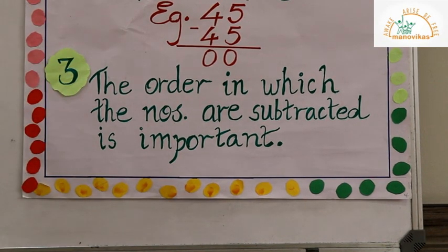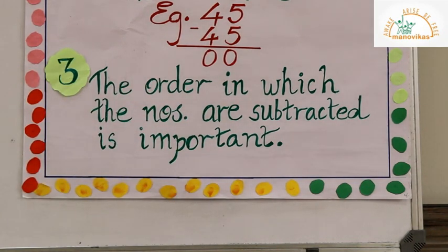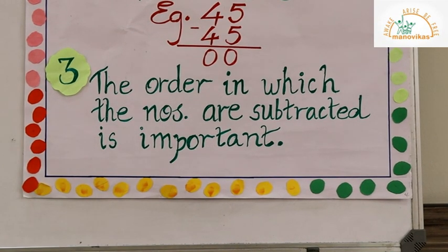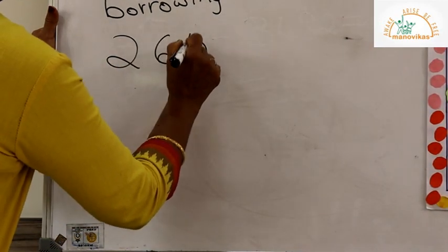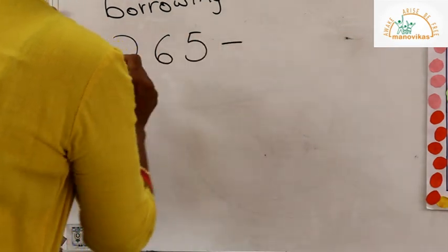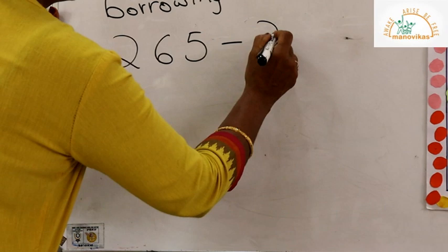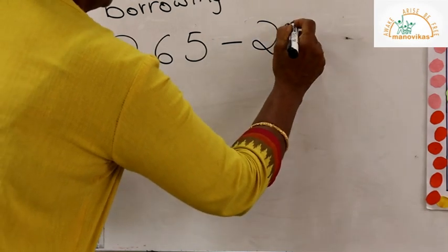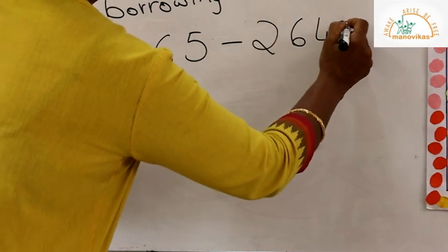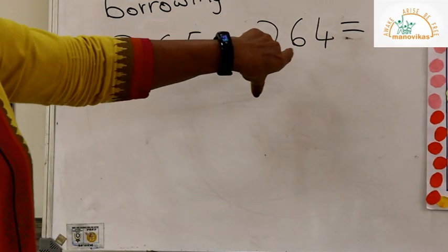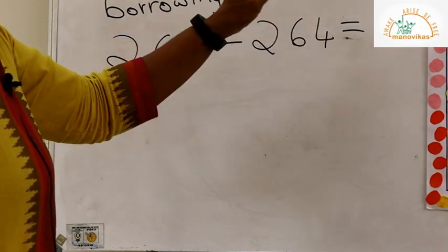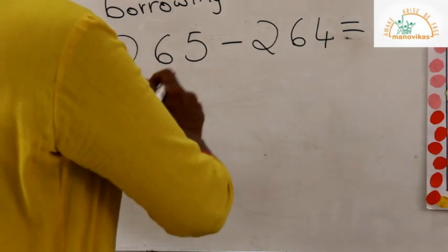The third property of subtraction: the order in which the numbers are subtracted is very important, because we cannot subtract a bigger number from a smaller number. For example, 265 minus 264 — 265 is a bigger number than 264, and hence we subtract the smaller number from the bigger number.